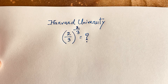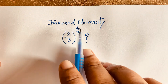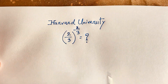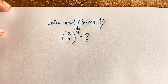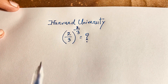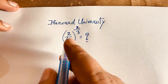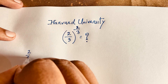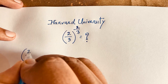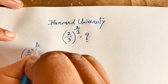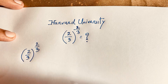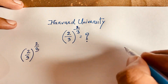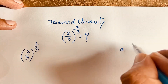How to simplify 2 over 3 to the power 2 over 3. So our question here is (2/3) whole to the power 2/3.